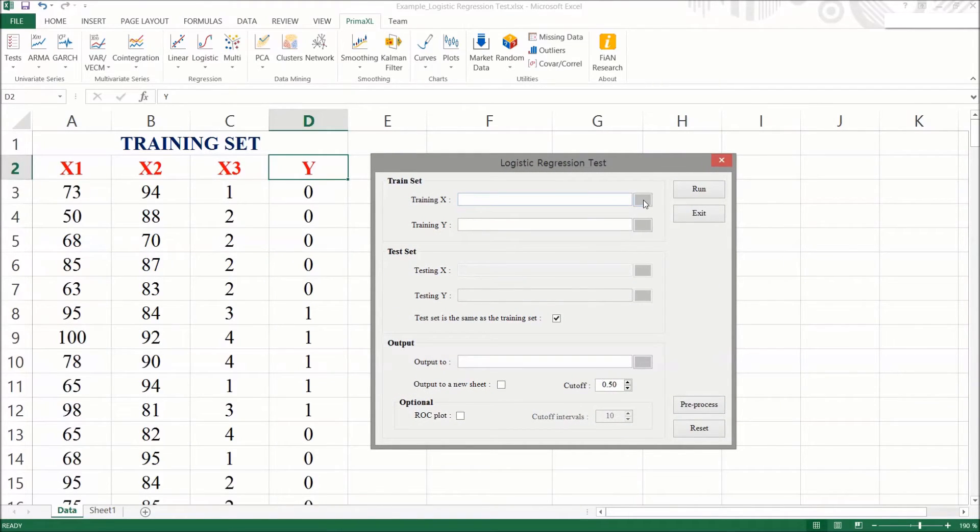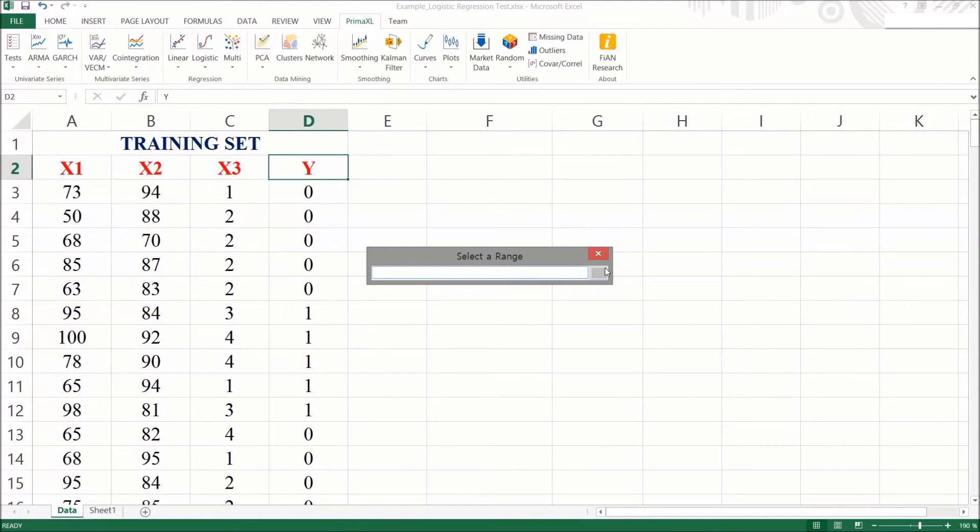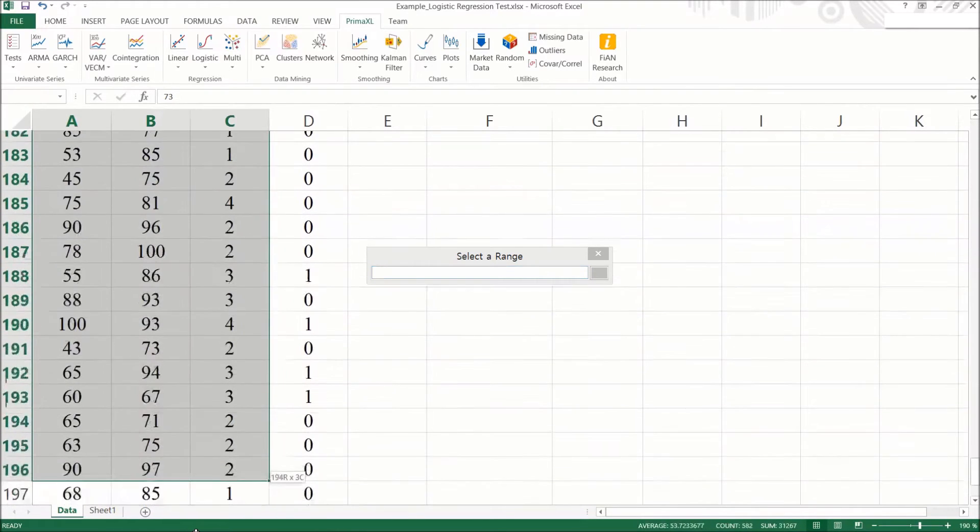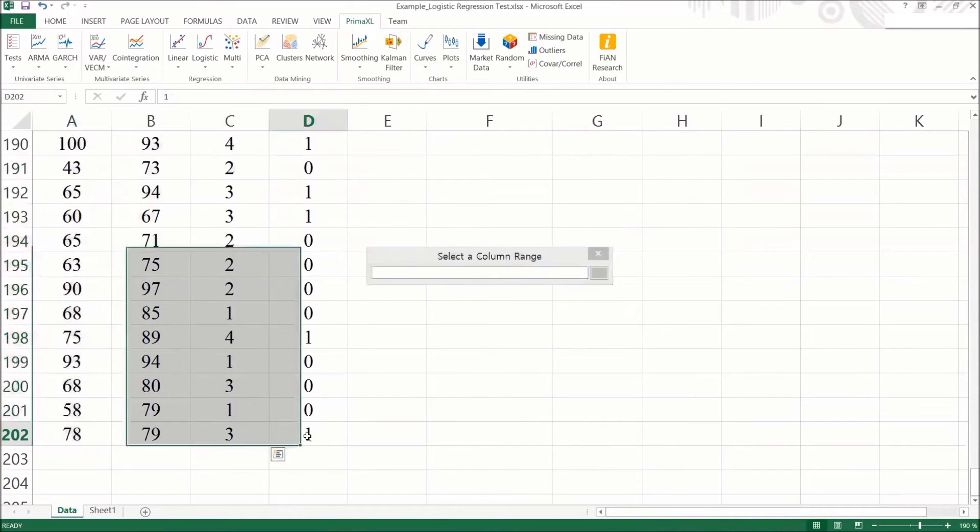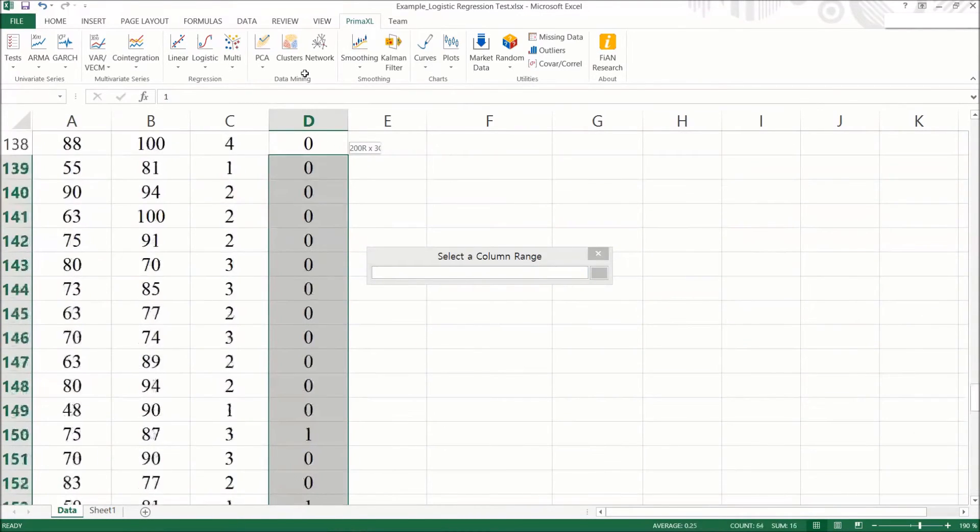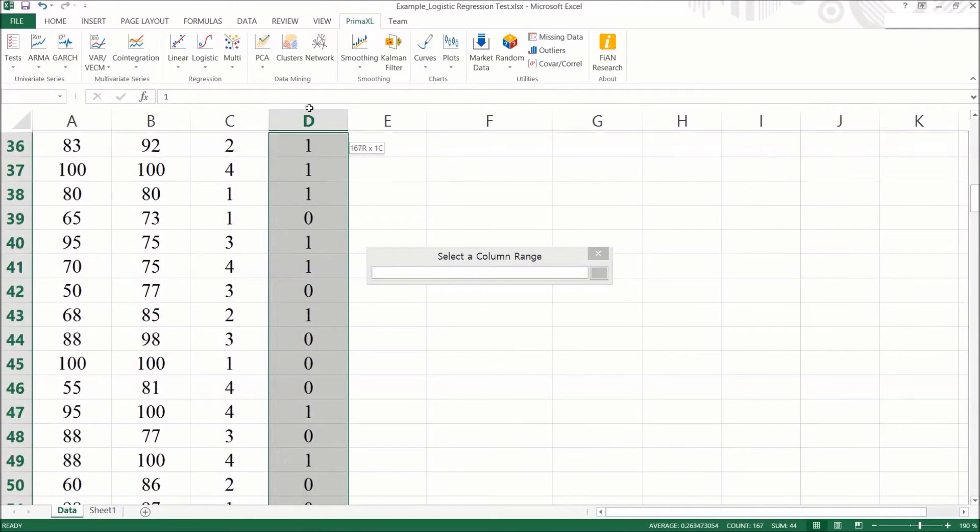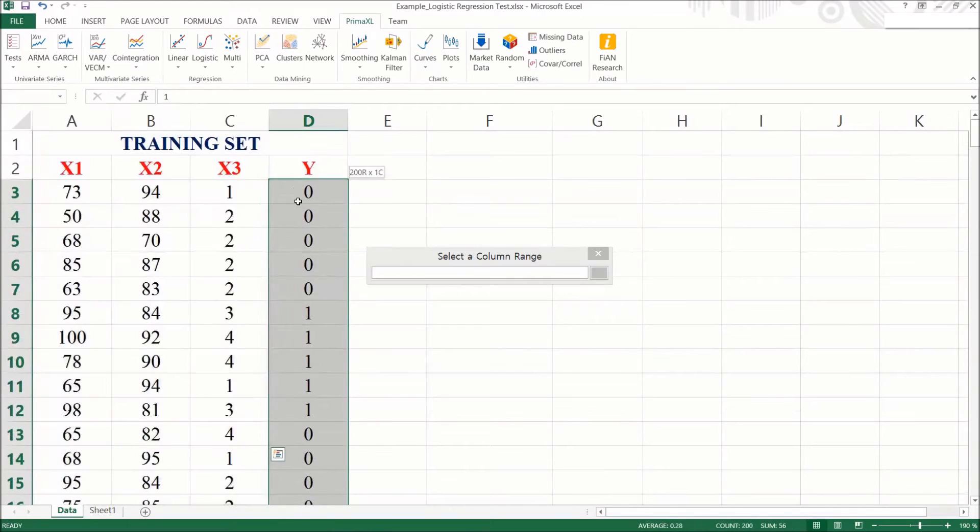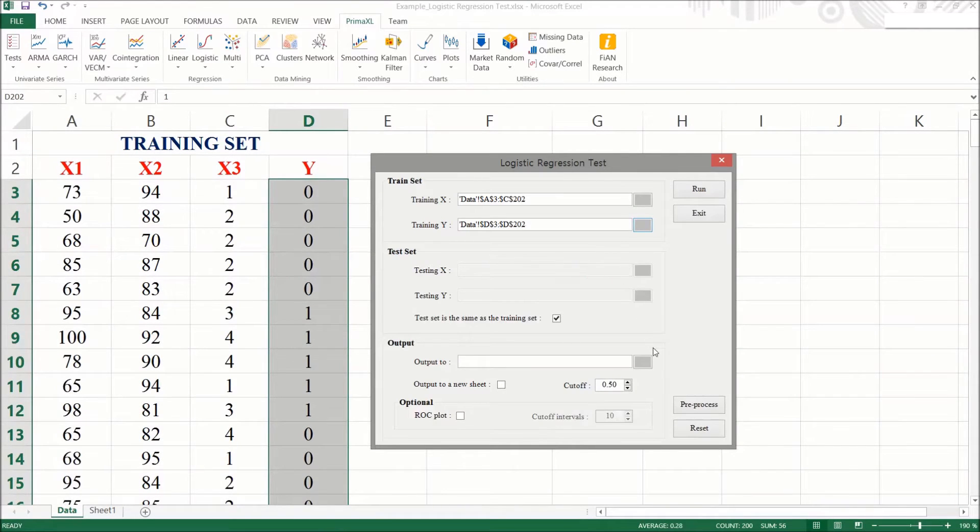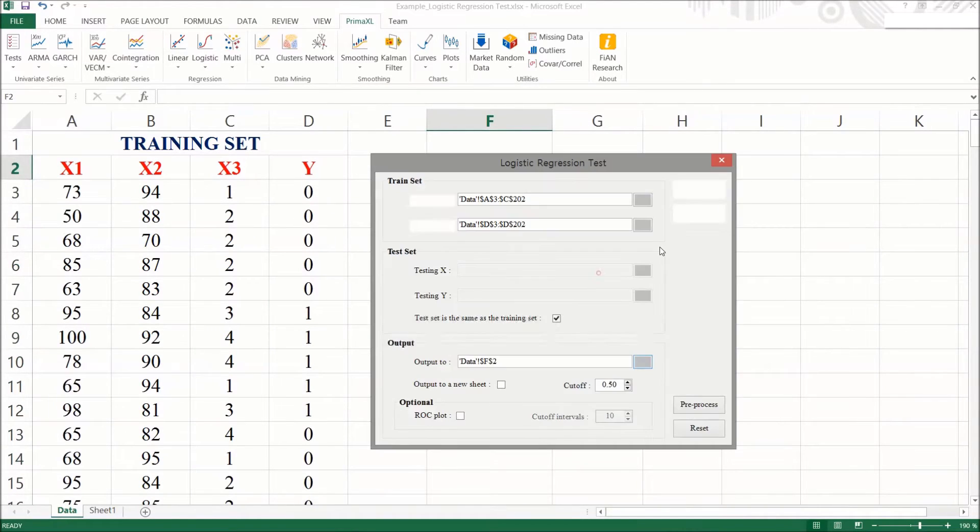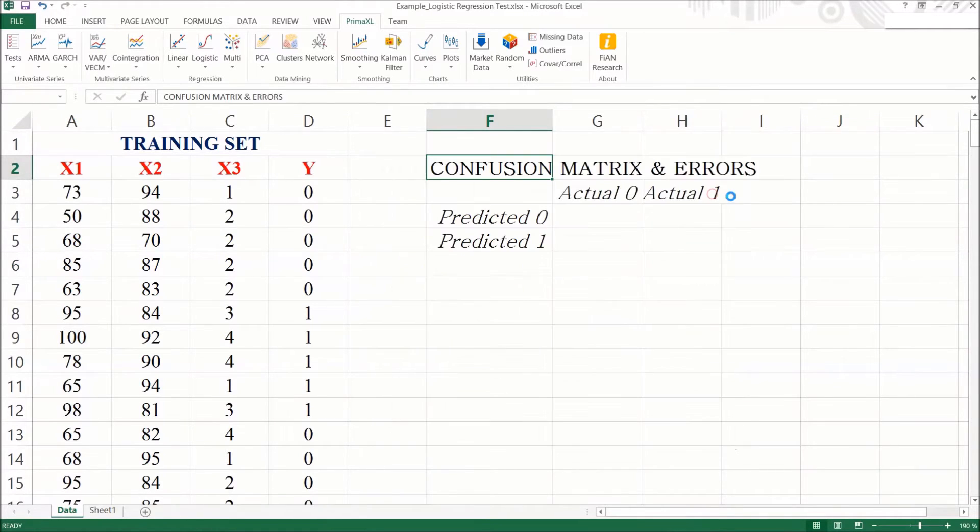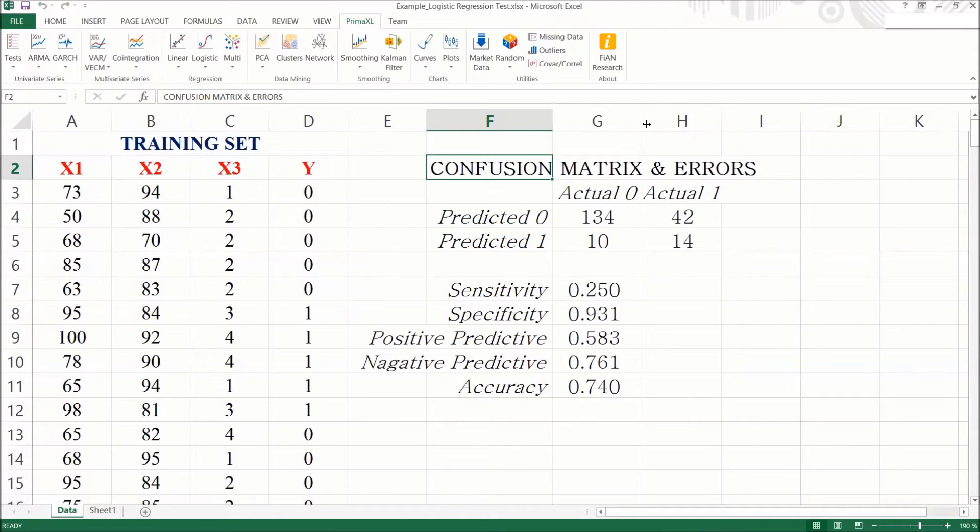Let's fill out the rest of the form. We can click on this small button and bring up the range input form where we can easily enter the cell range by selecting. Okay, I think we are ready. Now just press the run button. Excellent! We have the result.